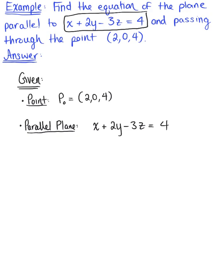We know that the normal vector of this plane is important. The normal vector of this first plane, n sub 1, has components defined by the coefficients of the variables: 1, 2, minus 3. Those are the components of this normal vector.